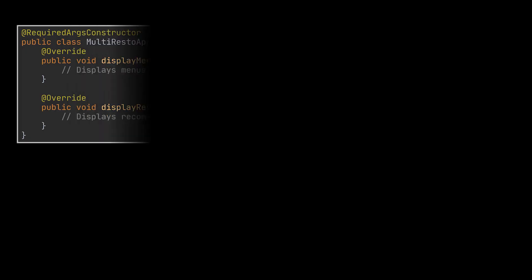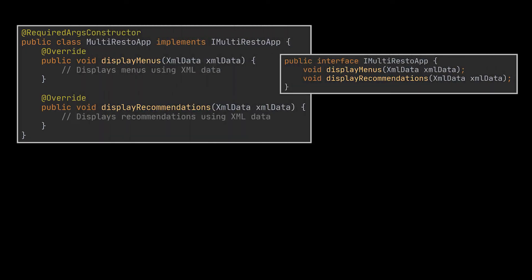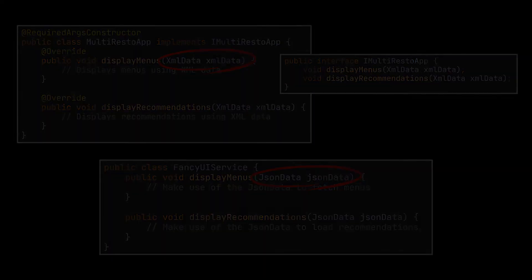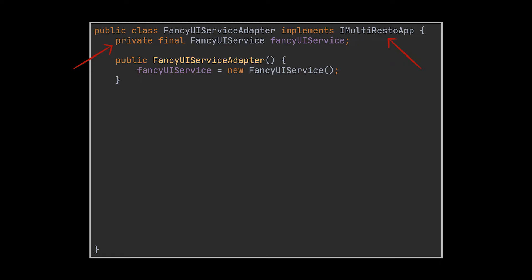Let's try to apply this pattern on the example we just had. Suppose we have this multi-resto app class along with its interface that takes in XML data, and that are being used by the UI modules of our app. Also consider that the fancy UI library we mentioned is making use of the fancy UI service class you see in front of you. This class takes as input a certain JSON data object. Therefore, what we need is a class that will allow us to transform the XML data we have to JSON.